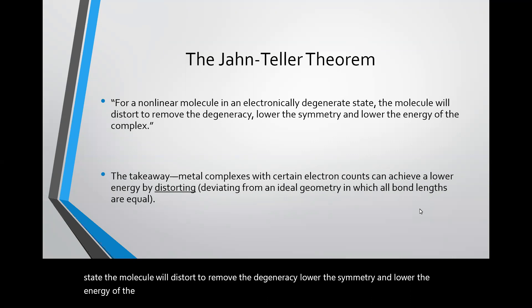So although that's quite a mouthful, the takeaway is pretty simple. That is that molecules with certain electron counts can achieve a lower energy by distorting, so that means deviating from an ideal geometry.